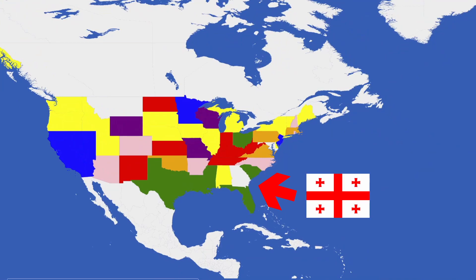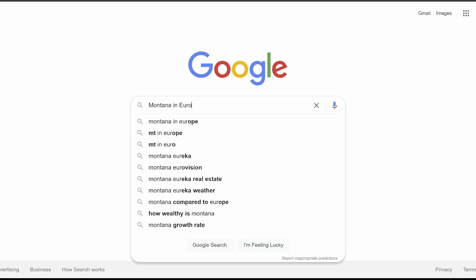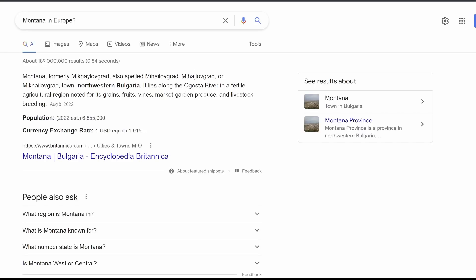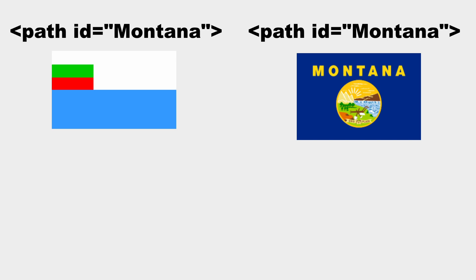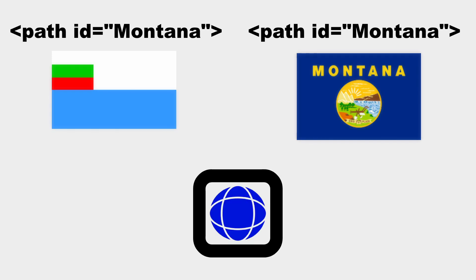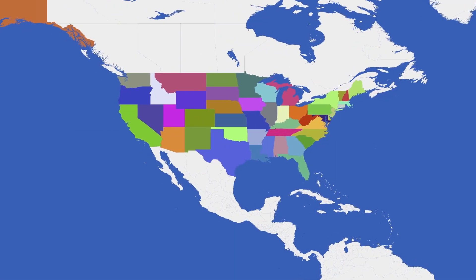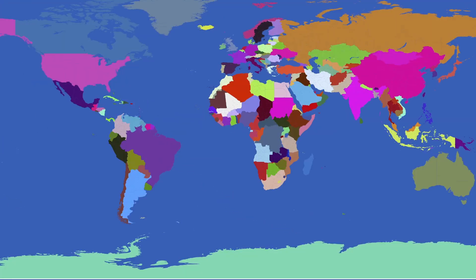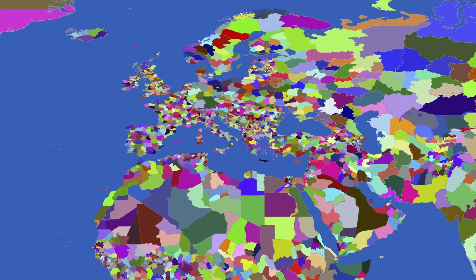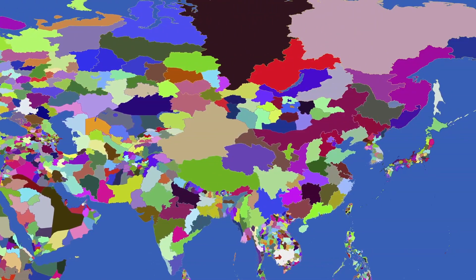I tested the function by coloring all U.S. states a random color. Looks good, except — Georgia picked up the Georgia ID from Europe first. And wait — Montana? There's a Montana in Bulgaria! Originally each path's element ID was the exact name of the territory, but if there's a Montana or Georgia with the same name, it gets the same ID and the program can't distinguish between the two. To fix it, I added a tag to the relevant authority and checked both names before changing any colors. Now the U.S. has no gaps.